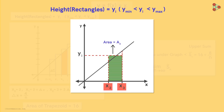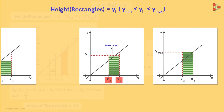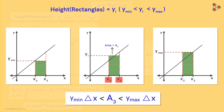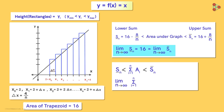The area of this rectangle will be less than the area of the rectangle using the maximum y value, and greater than the area using the minimum y value — so this area will always be between those two areas. This is true for any sub-interval. So the sum of the areas of these rectangles will always be between the lower sum and the upper sum. Since as n tends to infinity both the lower sum and the upper sum approach the area under the graph, so will this sum.